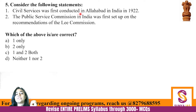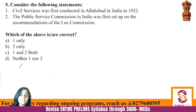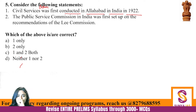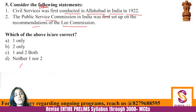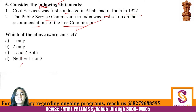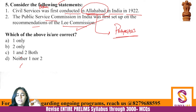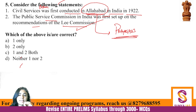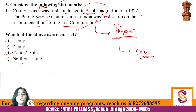Question 5: The Indian Civil Services examination was first conducted in Allahabad in India in the year 1922, and the Public Service Commission in India was first set up on the recommendations of the Lee Commission. Both statements are correct. The civil services exam in India was first held in Allahabad, present-day Prayagraj, and later the exam started being held in Delhi.